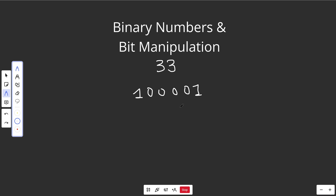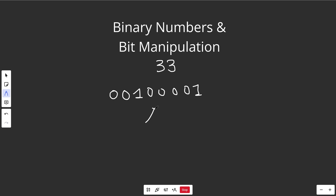For this lesson, let's use 8-bit numbers. You would pad this with 0s, and now it's an 8-bit number. So this would be the 2 to the 0 column, this would be 2 to the 1, 2 to the 2, all the way up until 2 to the 7. Now technically what I just showed you is called an unsigned integer, meaning there is no sign — it's just positive.